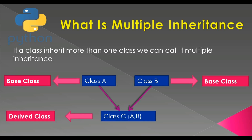For example, here I have two classes: class A and class B. These two classes are base classes. After that I have another class called class C. Class C inherits from both class A and B — this is the derived class. Class C can access all attributes and behaviors of class A, and also all attributes and behaviors of class B. This is a simple explanation of multiple inheritance.